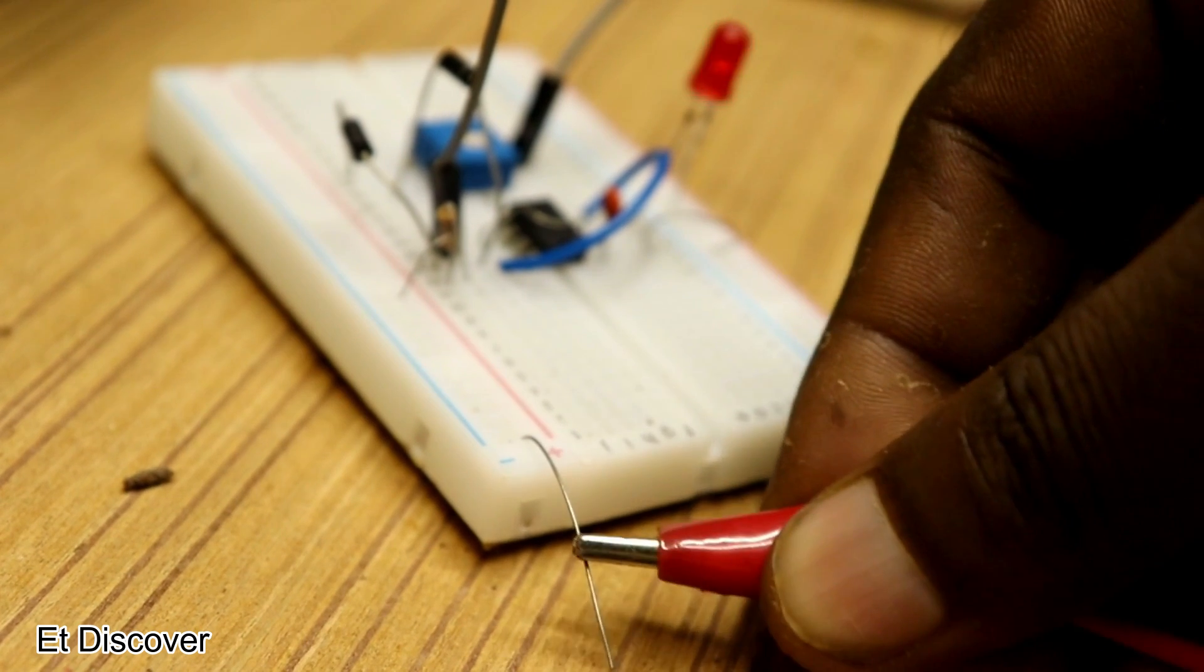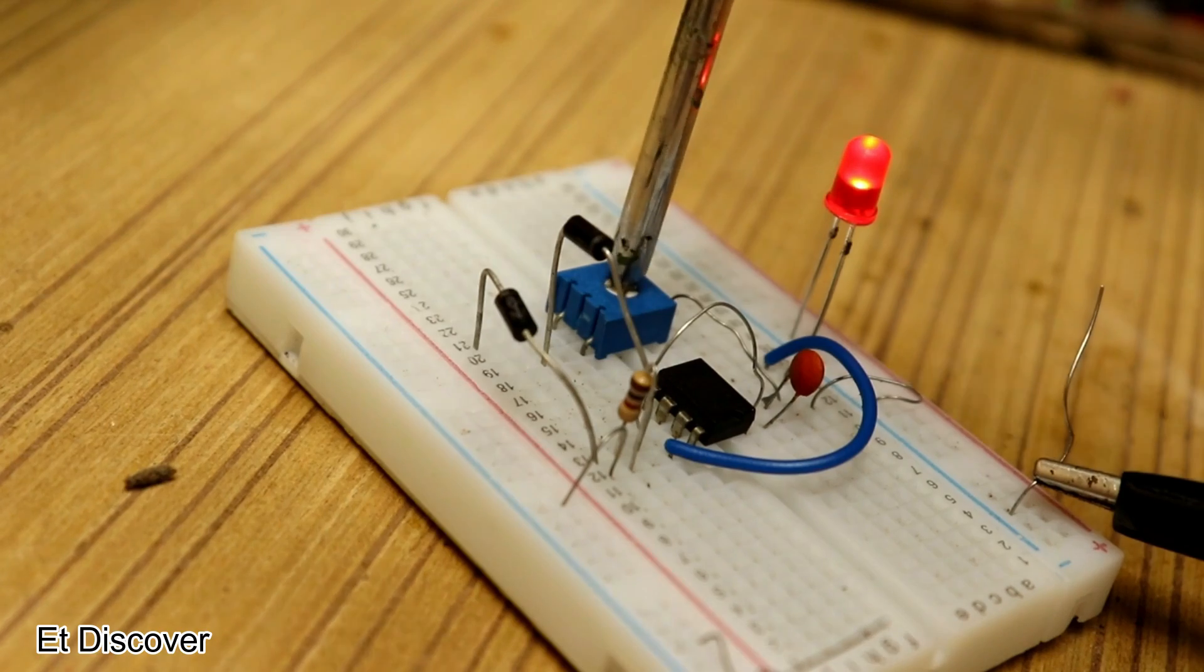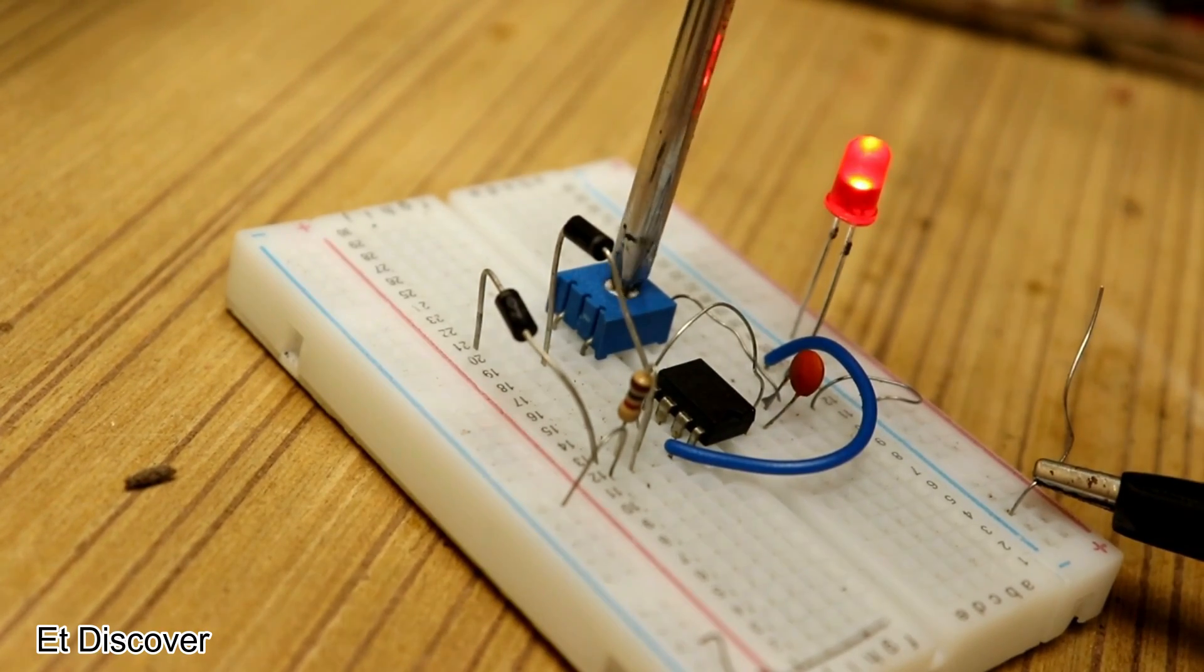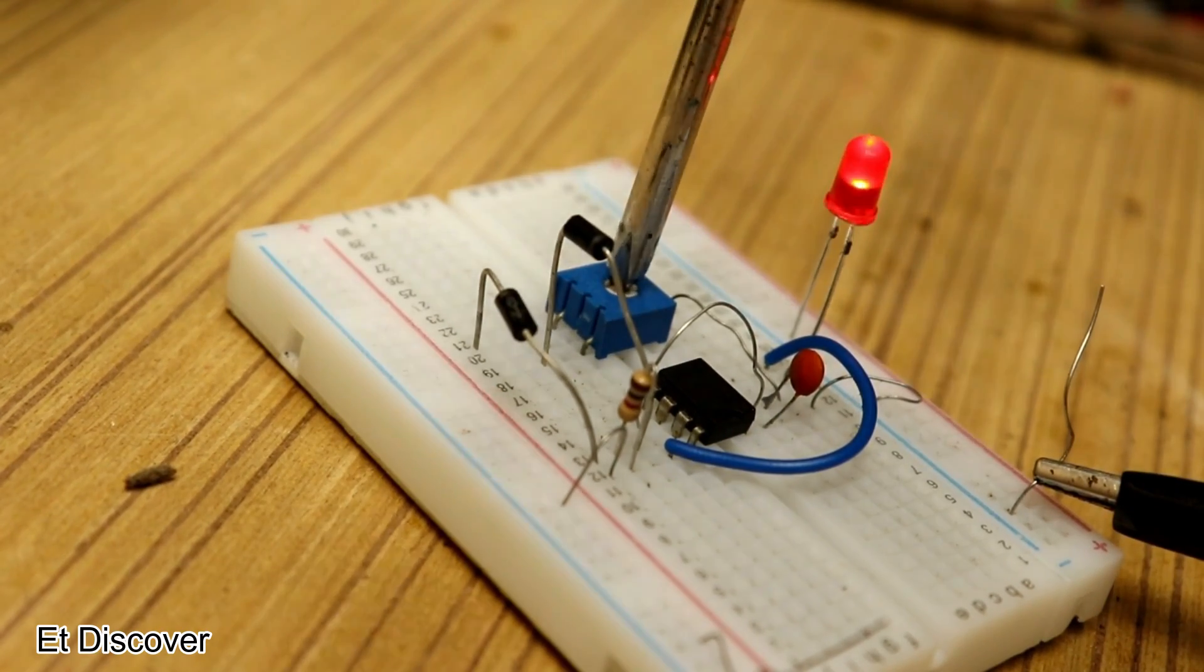I inserted 5V and rotated the preset slowly. You can see the LED is increasing slowly and also decreasing in the same way.